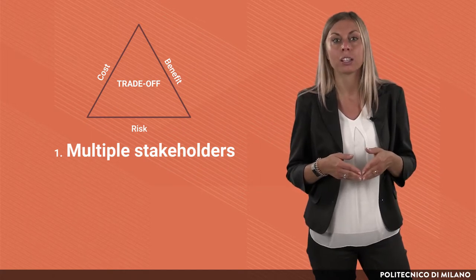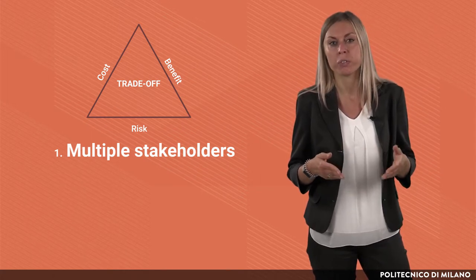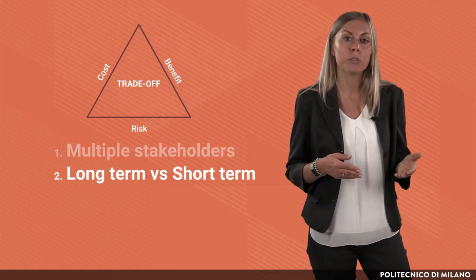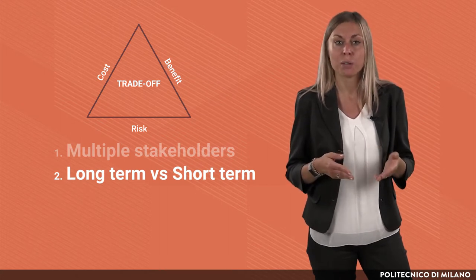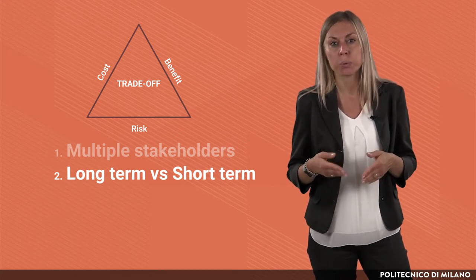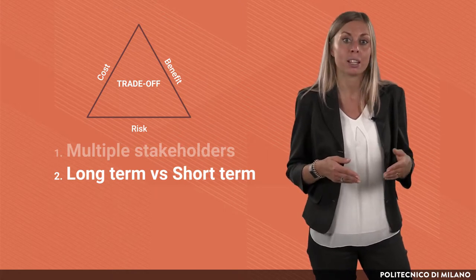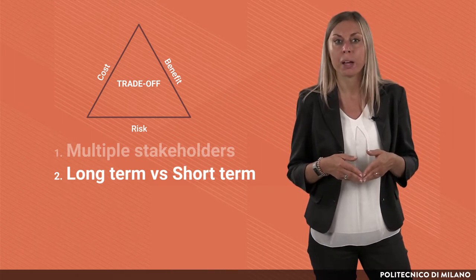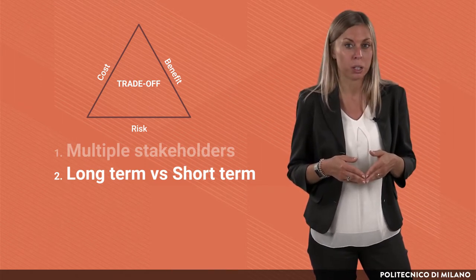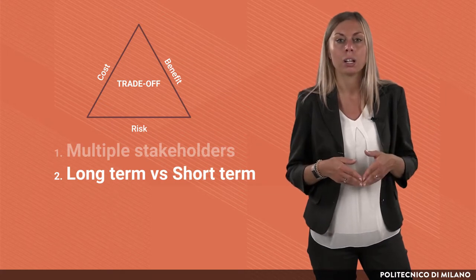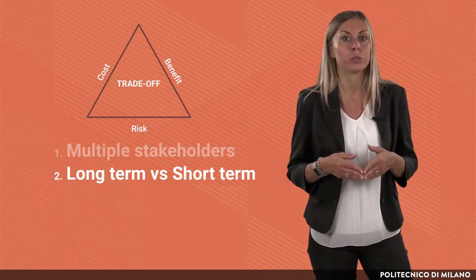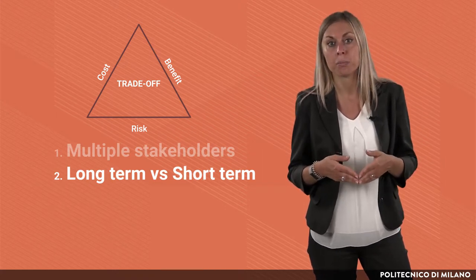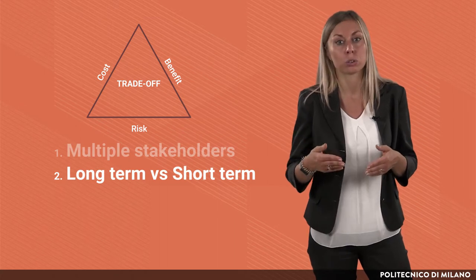A variable impacting on trade-offs even with a single stakeholder is time. A typical example is the case of long versus short-term decisions. In some cases, an option is improving performance in the short-term, whereas a second option is better in the long-term. Generally, this choice depends on the propensity of the decision-maker as well as on the external environment. A company with a difficult financial position is more interested in projects with a short payback time rather than a higher profit in the long term.